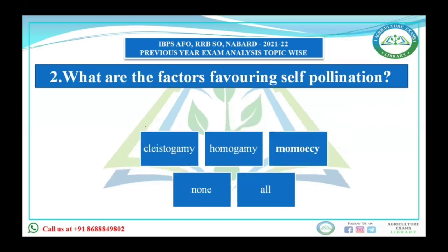Next question: what are the factors affecting self-pollination? Self-pollination is the transport of pollen grains from the anther to the stigma of the same flower or another flower of the same plant. There are various factors affecting self-pollination. First is cleistogamy — it is the condition in which flowers never open before anthesis.